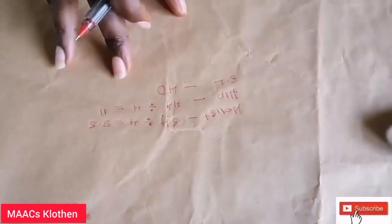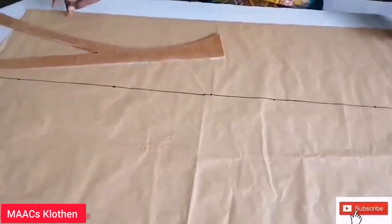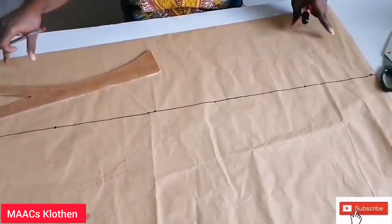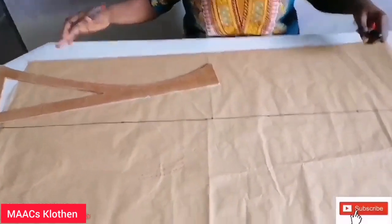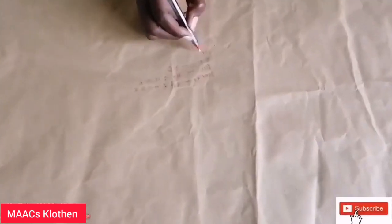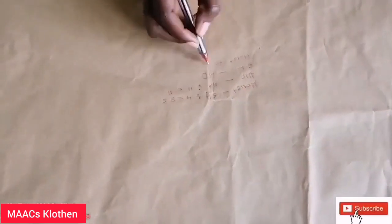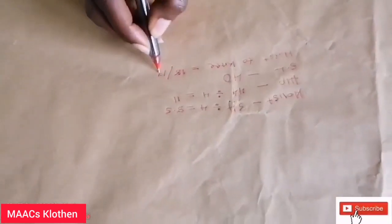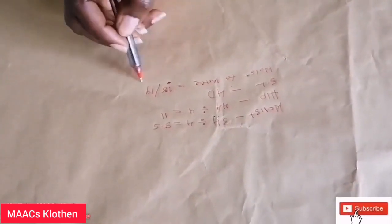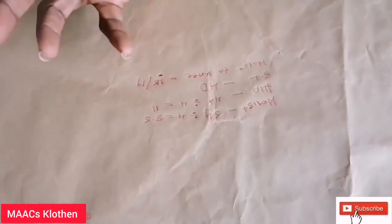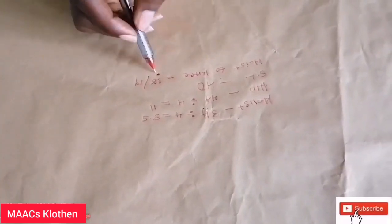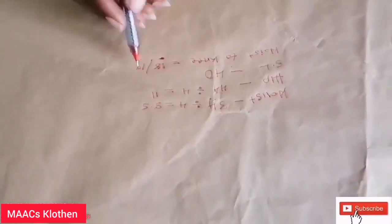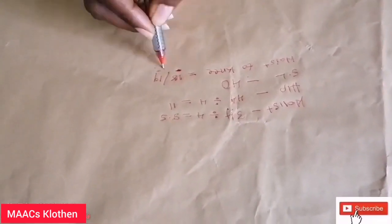We'll use those values to draw our pattern. We have a 10-inch line, but you can decide to make it 8 — it determines how wide you want the flare at the bottom. You also need your waist-to-knee measurement, which is usually between 18 and 19 inches. I'm going to use 18. If doing this on fabric, use 18.5 so that the half inch becomes your seam allowance.